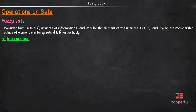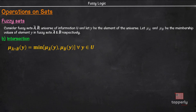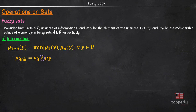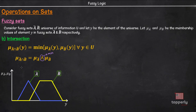The next operation is intersection. The intersection of fuzzy sets A and B is a fuzzy set A intersection B with the membership function: mu A intersection B of Y equals minimum of (mu A of Y, mu B of Y) for all Y belonging to U. We can shorthand this as mu A intersection B equals mu A intersection mu B. This operator is called the min operator and it gives the minimum of mu A and mu B. Considering the membership curves for fuzzy sets A and B, the membership curve for A intersection B will be the minimum of A and B, shown as the red curve.